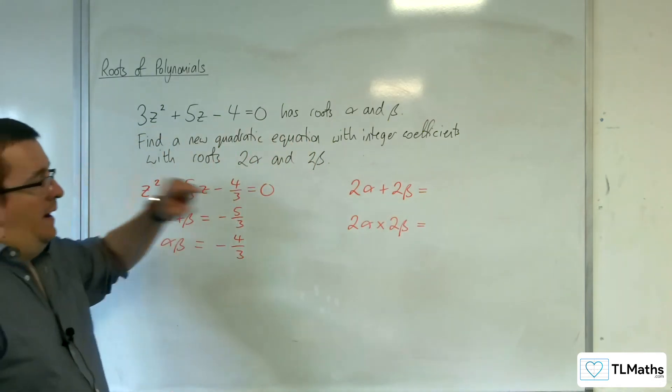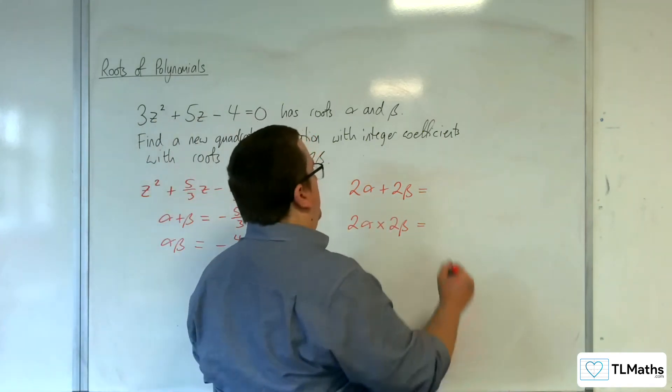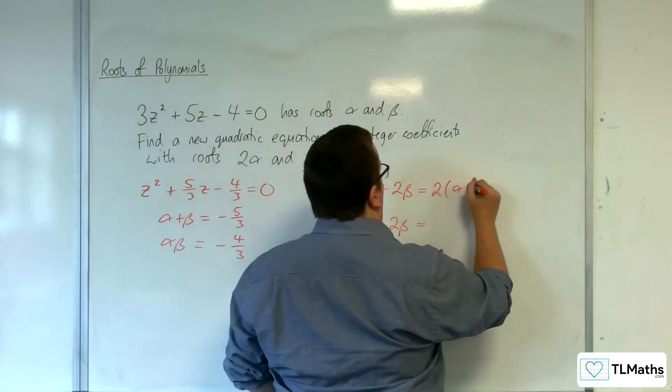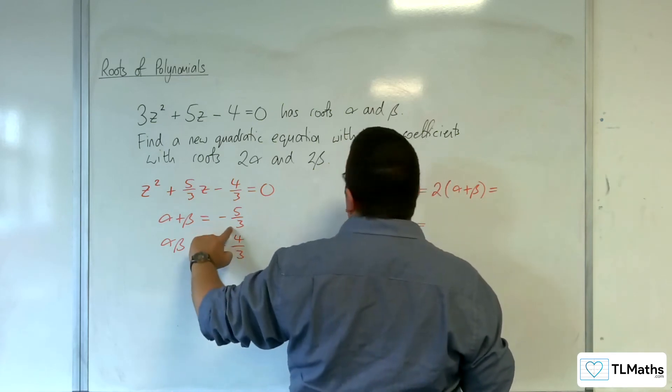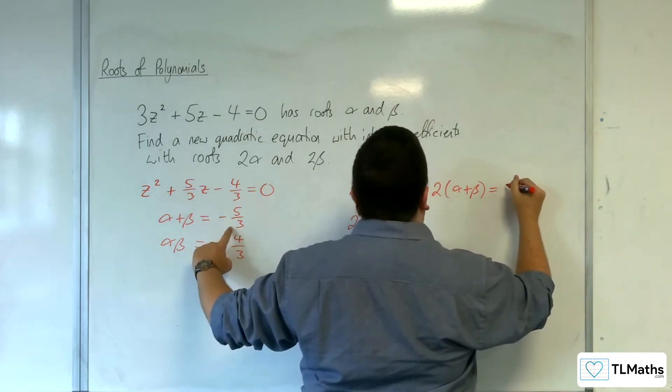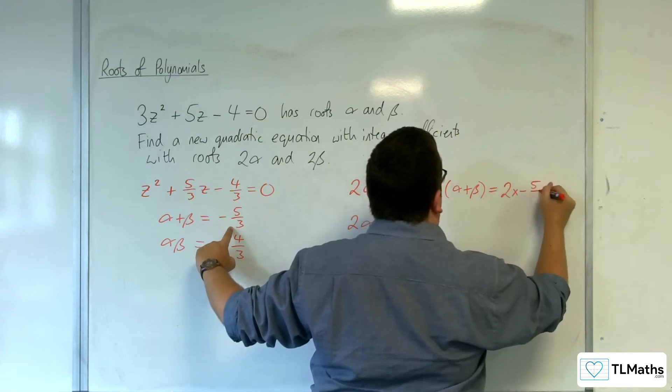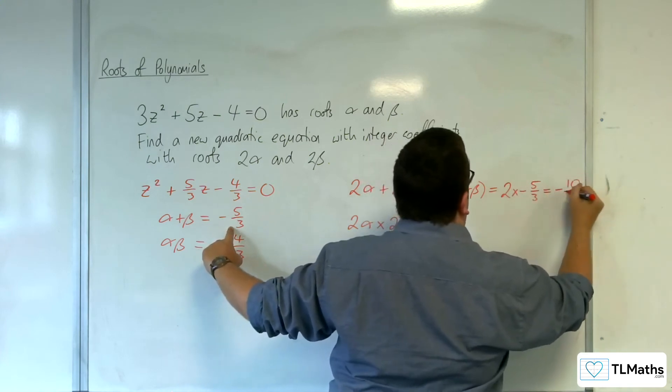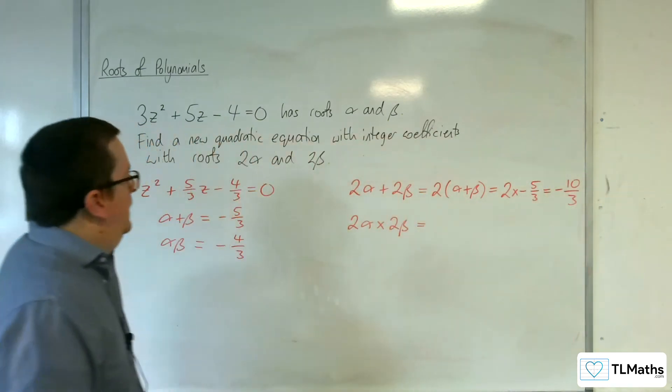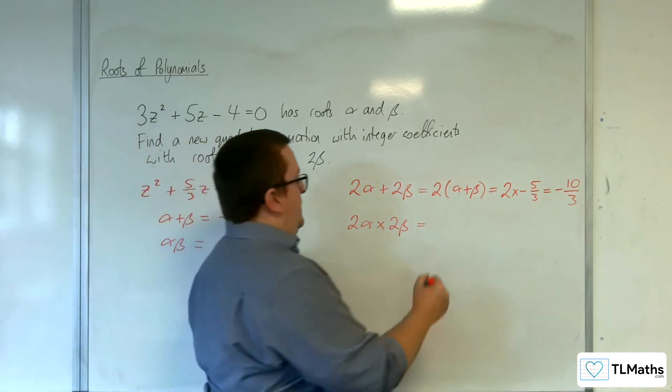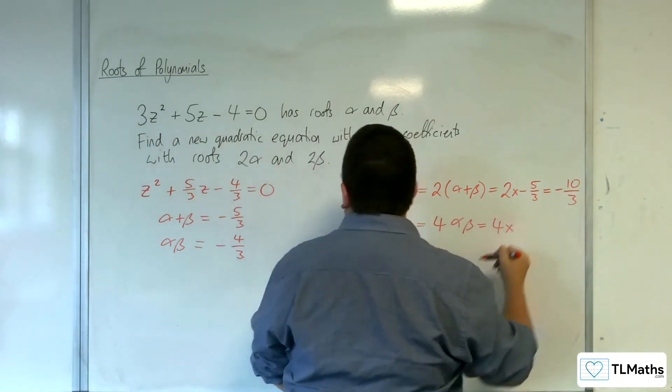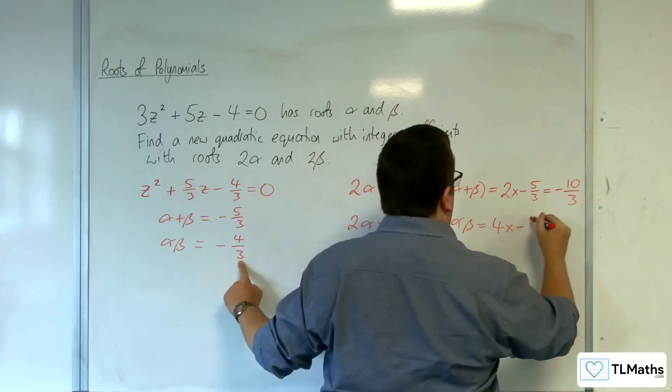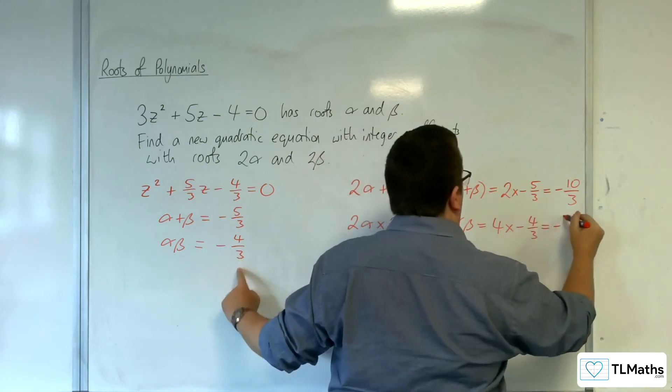Okay, so with that, I can say, well, 2α + 2β is the same as 2 lots of α + β. And I know what α + β is, it's -5/3. So 2 lots of -5/3 is -10/3. And 2α times 2β is 4αβ. So 4 lots of -4/3, so -16/3.